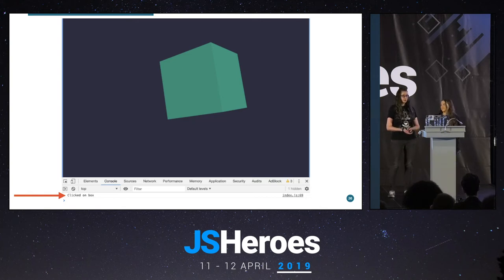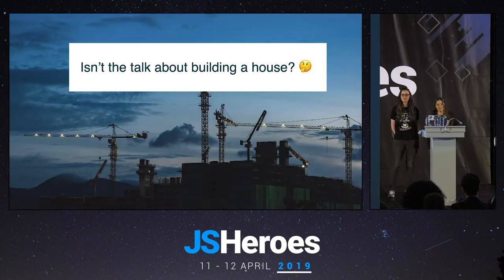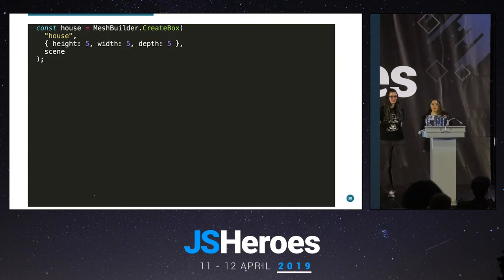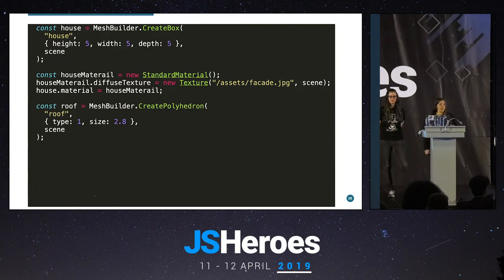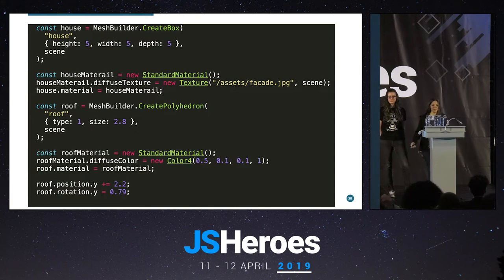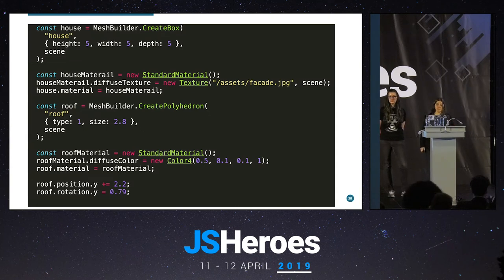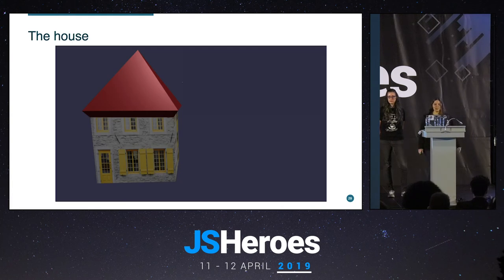We told you we don't want to build just a box — we want to build a house. A house normally has walls, so we use a box for that. I don't like gray houses, so I'm giving it a yellow texture. And a house needs a roof, so I'll use another mesh: the CylinderPolyhedron, which creates a diamond shape placed on top of the house. I give it a red color, adjust its position so it sits on top, and rotate it to fit. The result: we have a house — and we could have multiple houses.